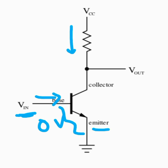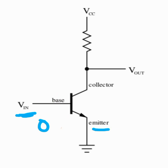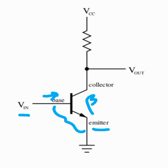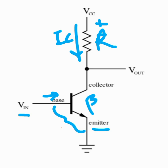On the other hand, when you have a high voltage at the input, the junction becomes forward biased, there is a current, and the transistor gain multiplies this current to produce an output current IC. There is a sufficient voltage drop due to the current flowing through the resistor.